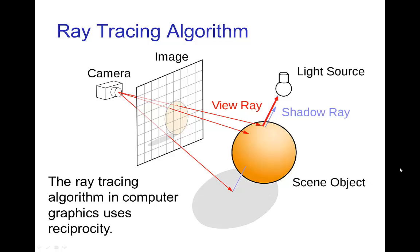Anyway, the point is, this is what's used in computer graphics, tracing rays from the camera to objects and then back to the light source. The physical rays actually come out of the light source, hit the objects, and go to the camera or viewer.